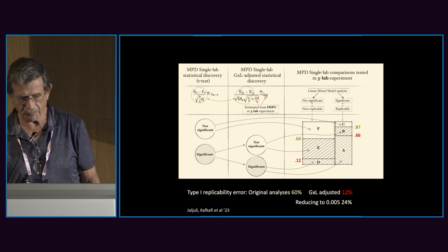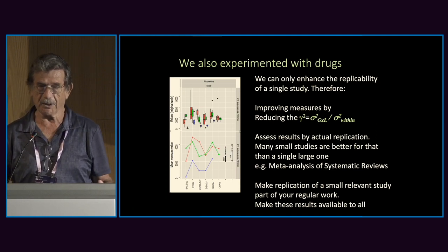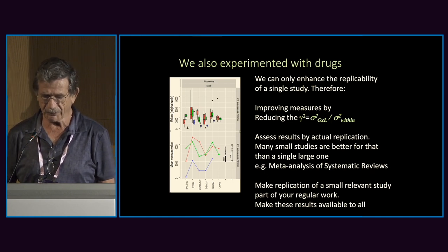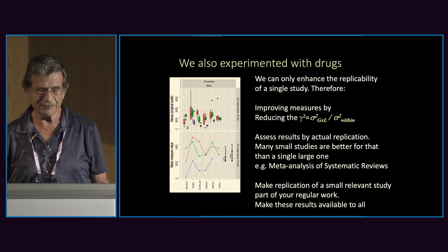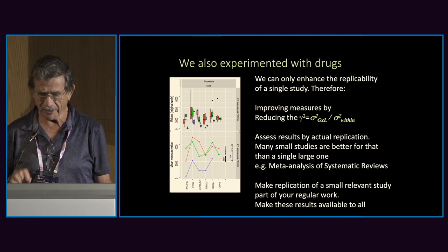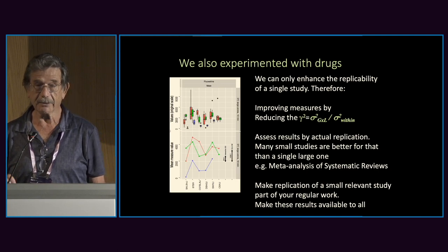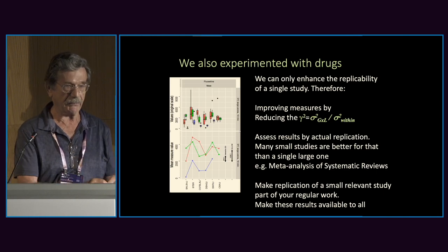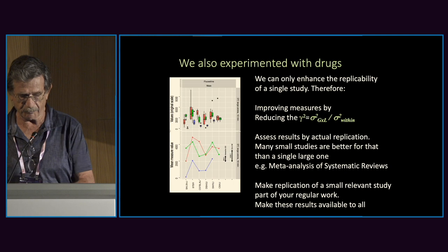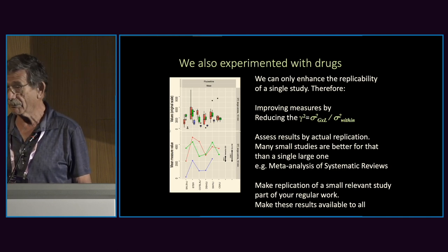The final points: we can only enhance the replicability of a single study, and we cannot be sure it's replicable until we test it. Therefore, try to improve measures by reducing the interaction relative to within-study variance. Don't standardize too much — heterogenize. Assess results by actual replication. Many small studies are better than a single large one, because from many small studies we learn about the interaction, which cannot be solved by simply increasing the number of animals in one laboratory. Make replication of small relevant studies part of your regular work and make the results available to all.